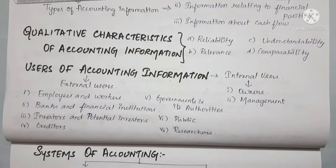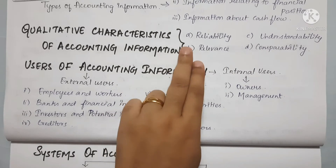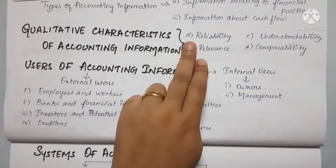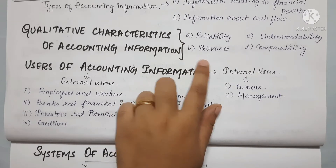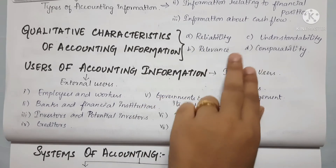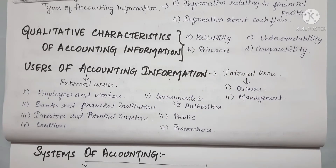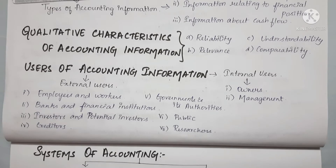Next we will talk about the qualitative characteristics of accounting information. There are four: reliability, relevance, understandability, and comparability. The first point is that information must be true and verifiable.